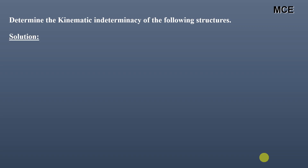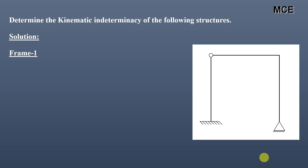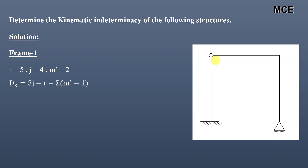Now we will calculate the kinematic indeterminacy of the following structures. Frame 1 has 5 reactions — 3 at the fixed end and 2 at the pinned end — 4 joints, and one internal hinge. The number of members meeting at this internal hinge is 2, so m′ = 2. The value of DK for this frame is equal to 8, meaning this frame has 8 degrees of freedom.